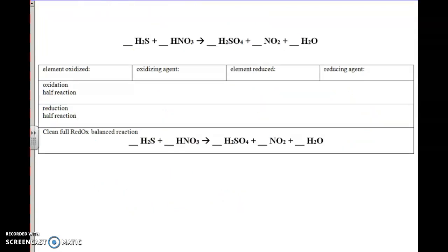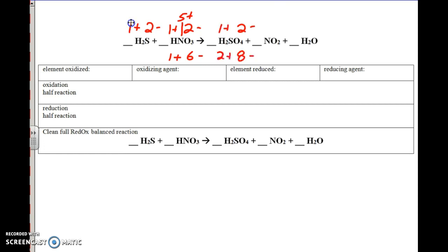So before I go over this next problem, you should follow the directions on your unit pack cover and see what you can get done. Then only play up to the parts where you have some work done, check your answers and see how it goes. So I'm going to start with oxidation numbers. Hydrogens are 1 positive, but there's 2 of them, so the sulfur has to be a 2 negative. Oxygen is a 2 negative. Hydrogens are 1 positive, so nitrogen would have to be a 5 positive. Oxygen is a 2 negative, hydrogens are 1 positive, so nitrogen would have to be a 4 positive.